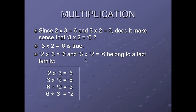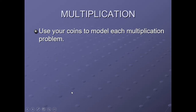Now see the fact family: 2 × (−3) = −6; (−3) × 2 = −6; (−6) ÷ 2 = −4. In the same manner, if you multiply one positive and one negative number we get a negative number. If you multiply two negative numbers we get a positive number.